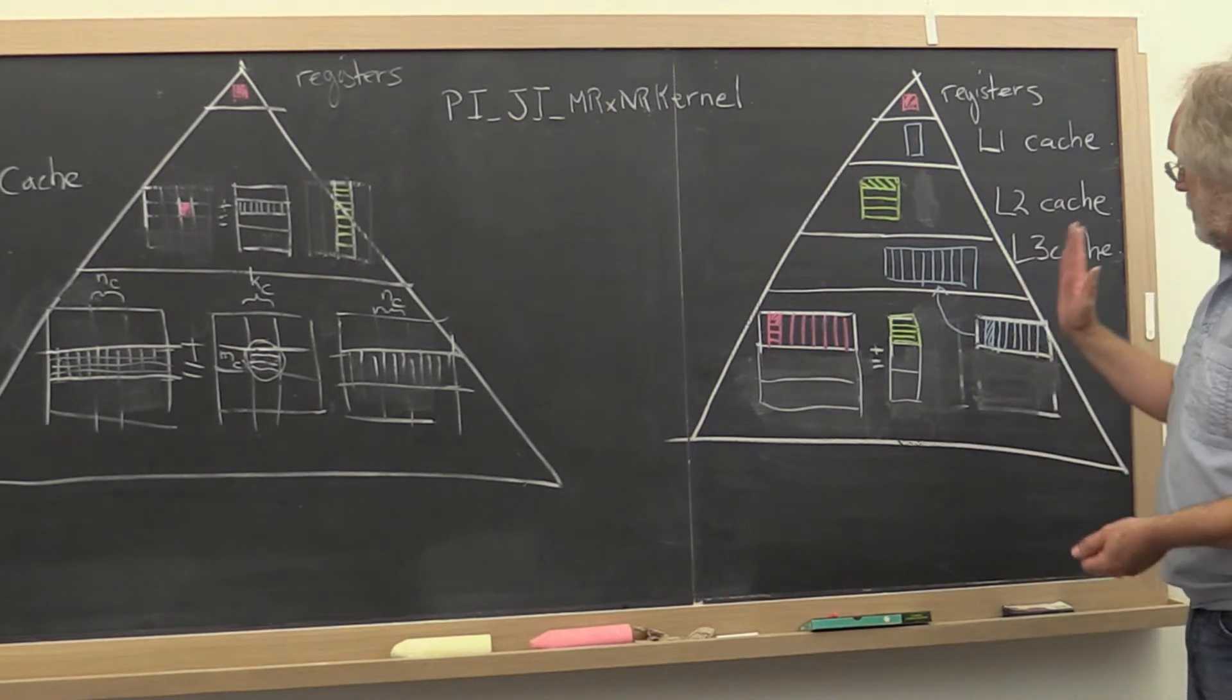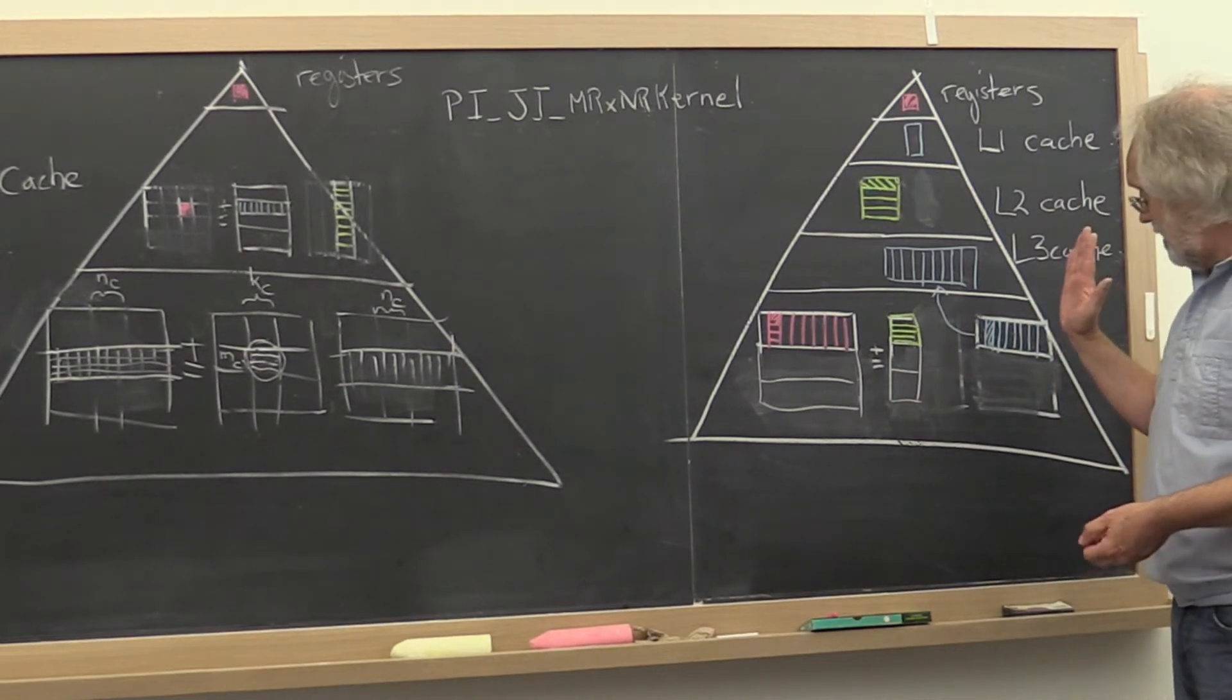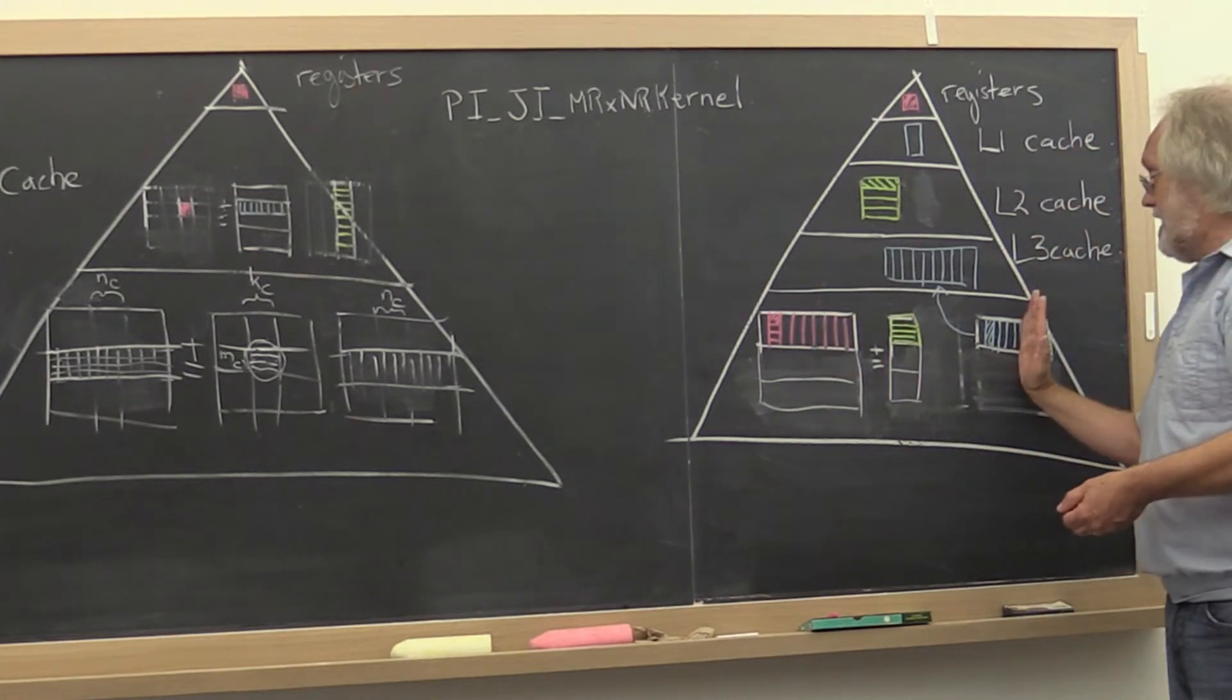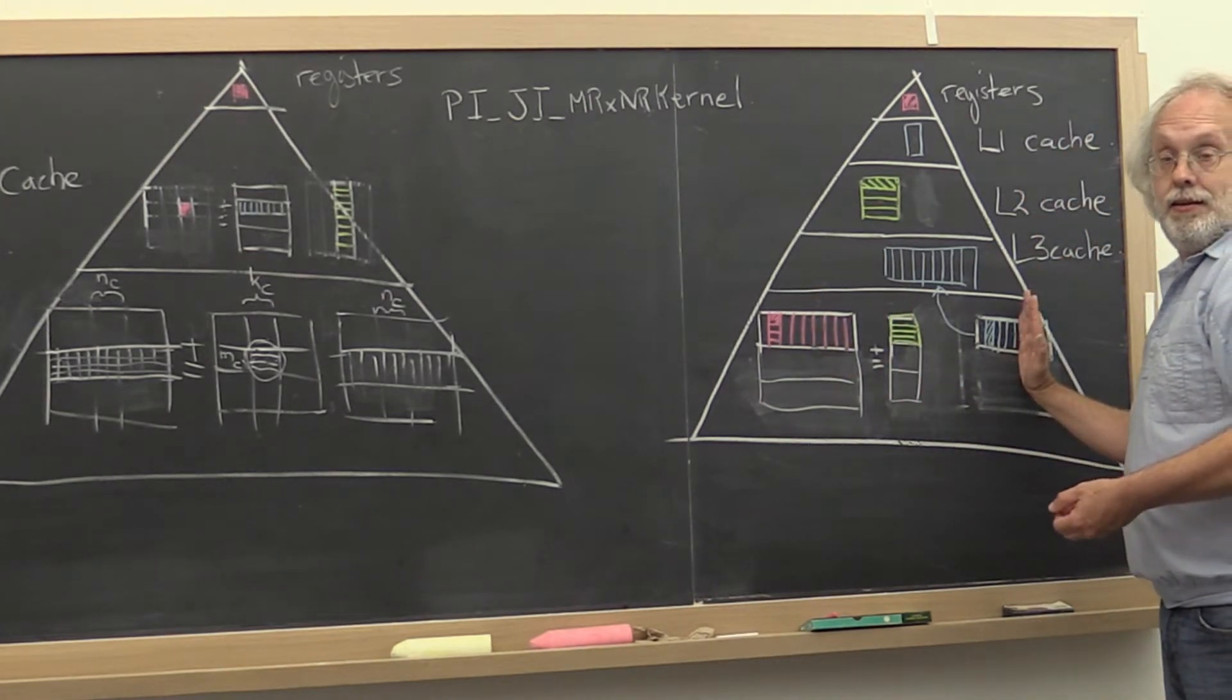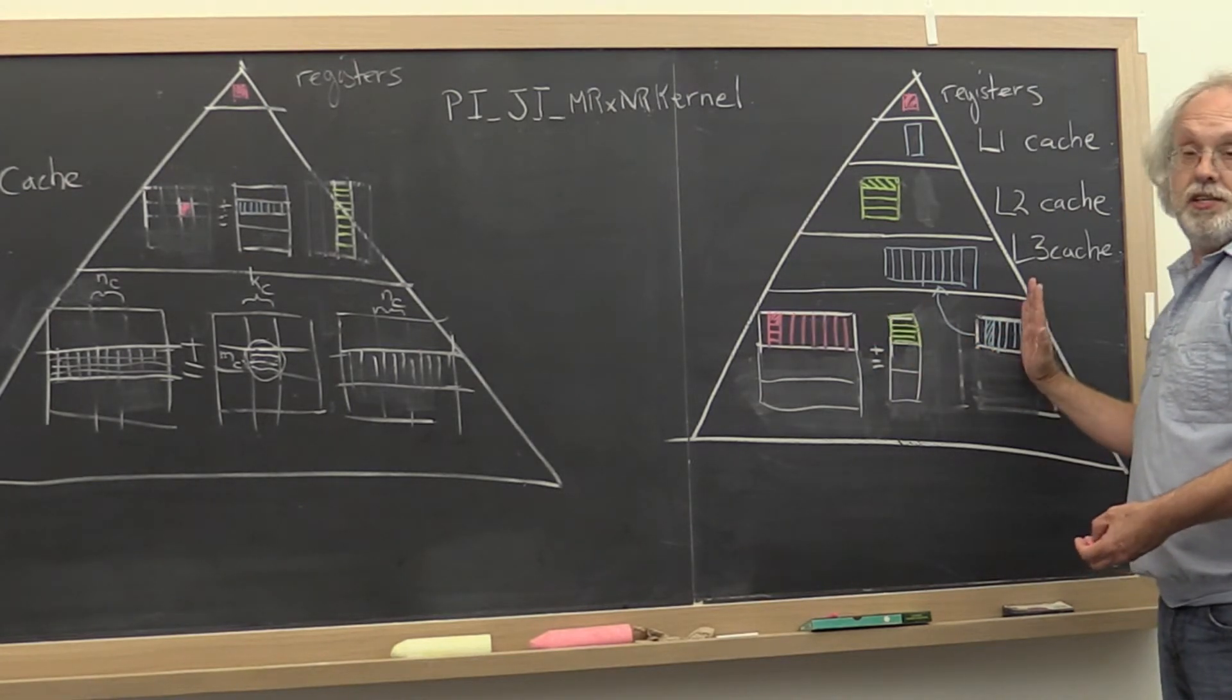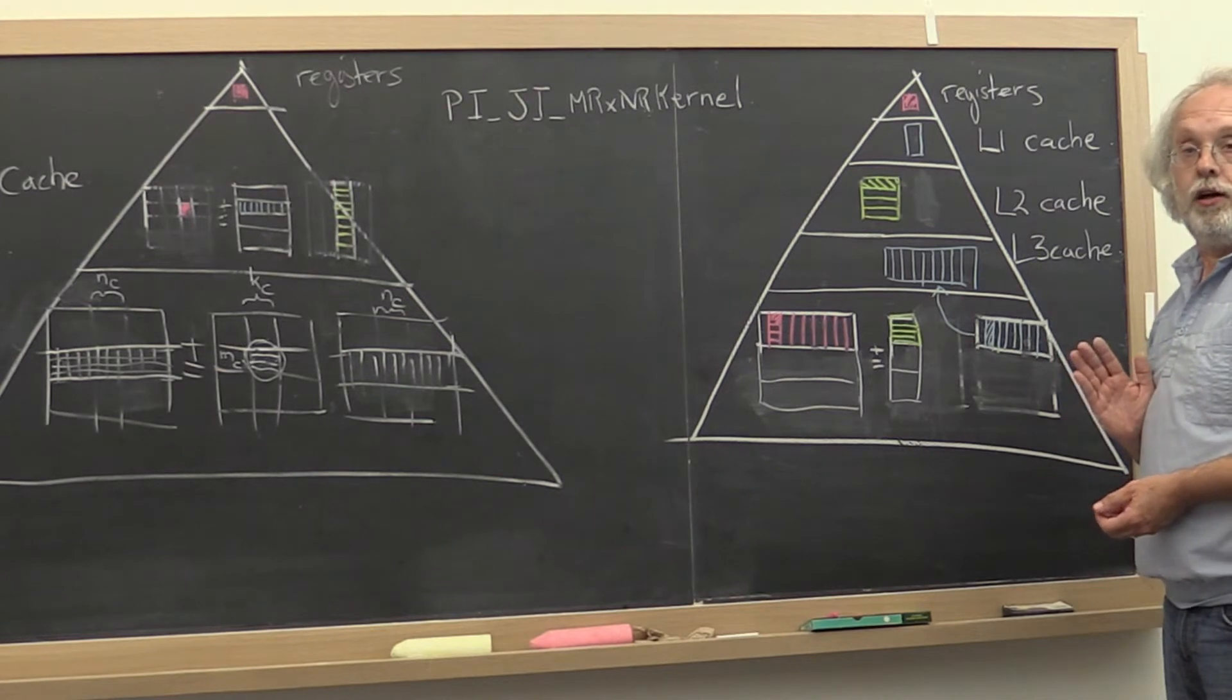Okay? We need to partition our matrix C and our matrix B in such a way that we do matrix matrix multiplies with matrices that have a limited number of columns.